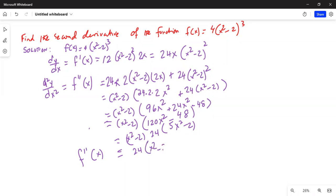So the whole thing now becomes f''(x) or second derivative is 24 times (x² - 2) multiplied by (5x² - 2). So this is the answer we are looking for.